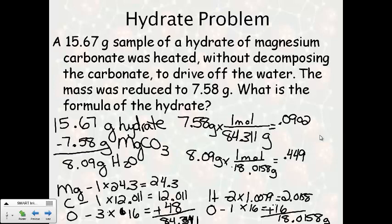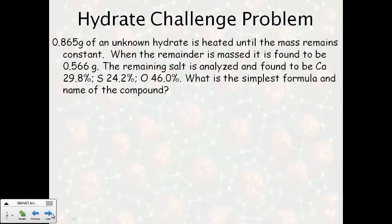And the next step, you put the moles of your water over the moles of salt. So you divide, and I got five. So that's how many waters are attached to magnesium carbonate. So your formula, I'm going to write it up here at the top, would be magnesium carbonate attached to five H2O's.